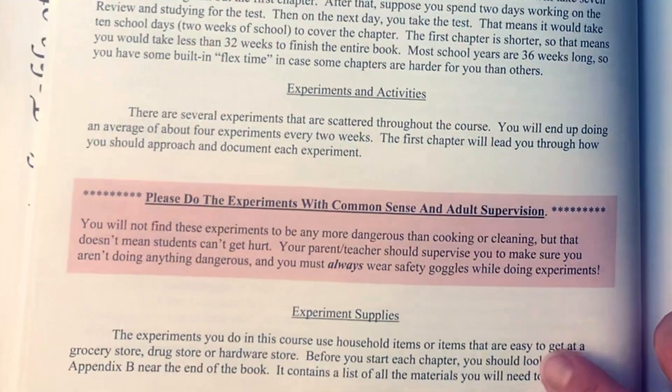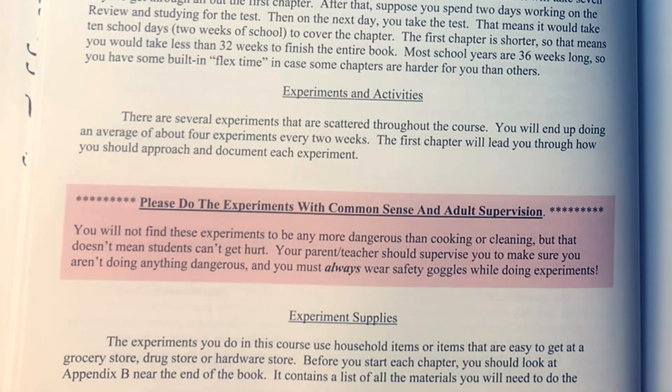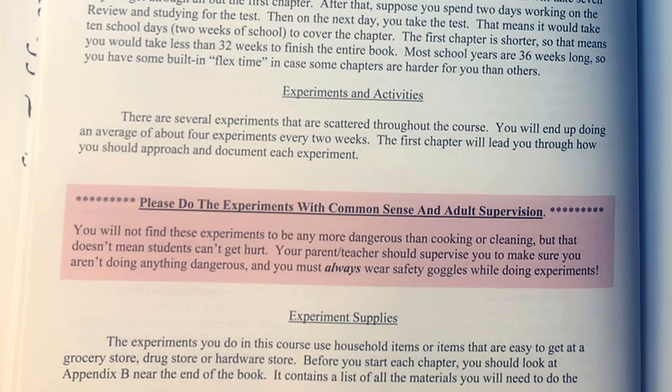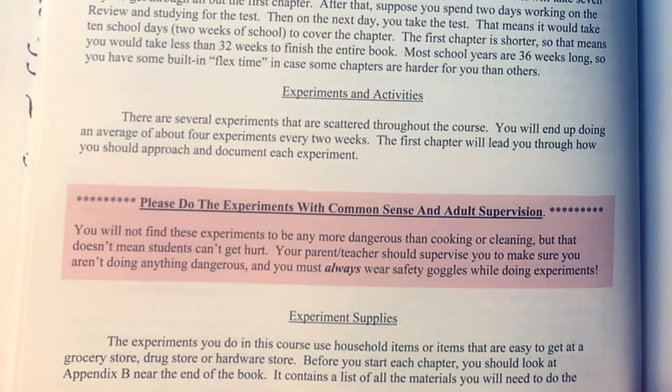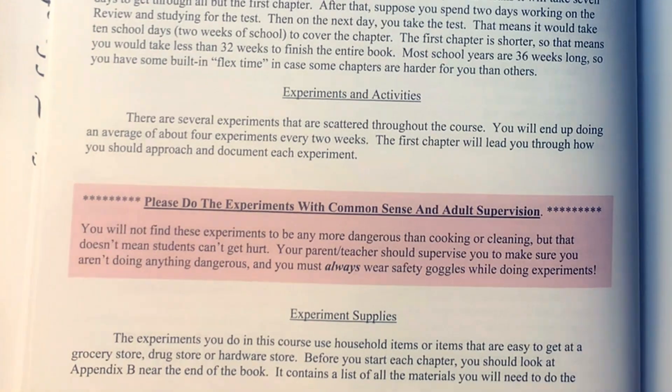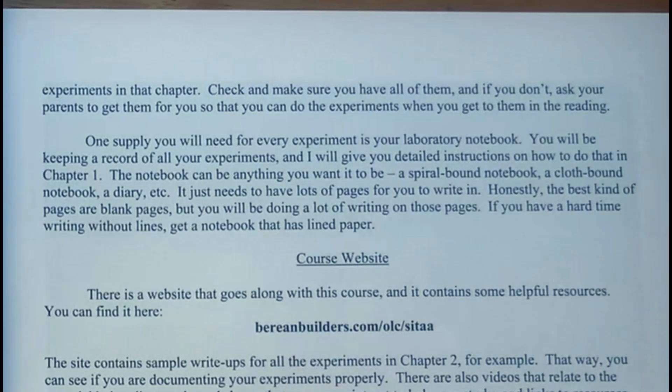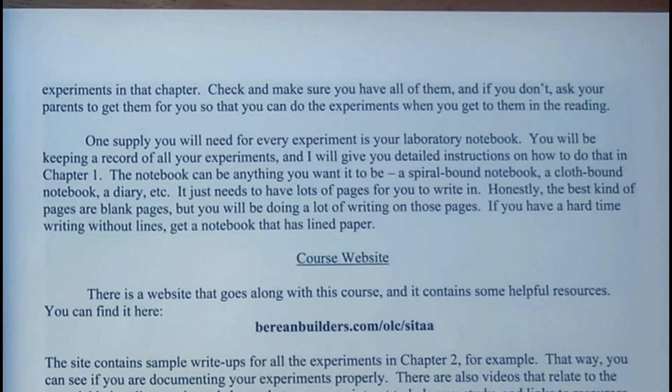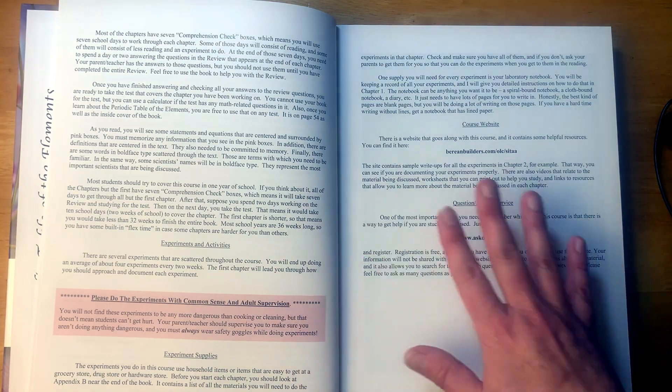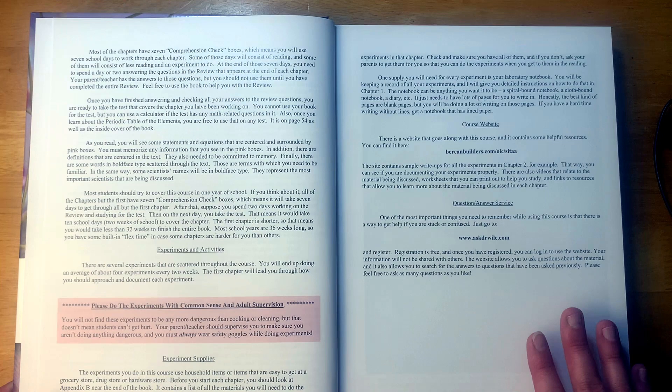Experiment supplies. So it says the experiments you do in this course use household items or items that are easy to get at a grocery store, drug store, or hardware store. Before you start each chapter you should look at Appendix B near the end of the book. It contains a list of all the materials you will need to do the experiments in that chapter. Check and make sure you have all of them and if you don't, ask your parents to get them for you so that you can do the experiments when you get to them in the reading. So it sounds like this book is written to the child at this point if they're telling them to go tell their parents.